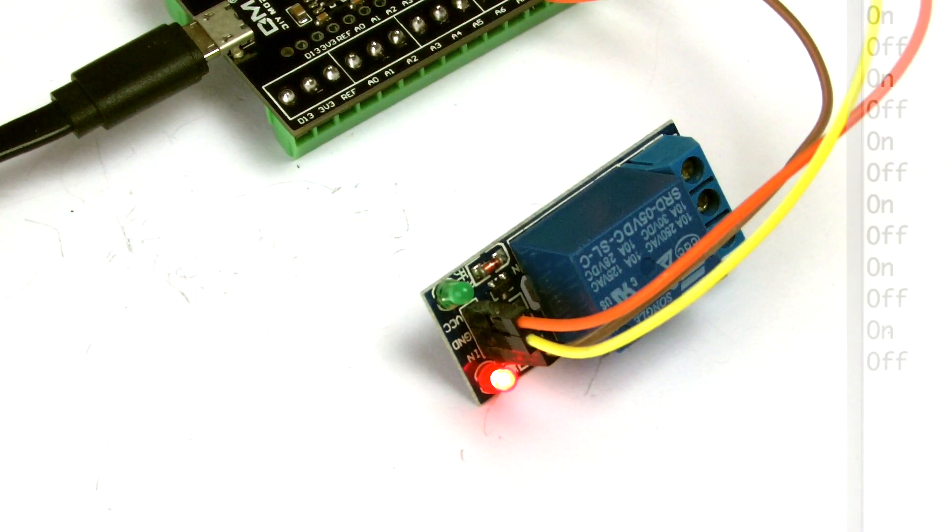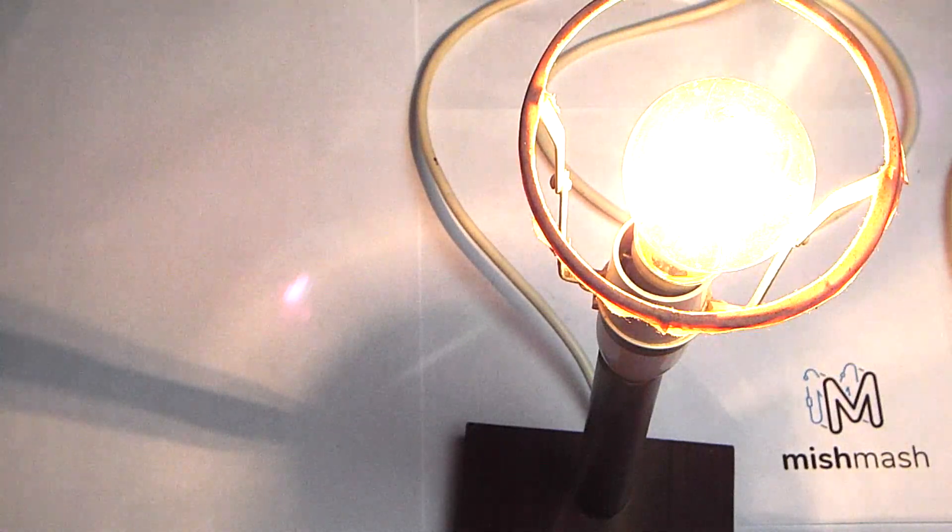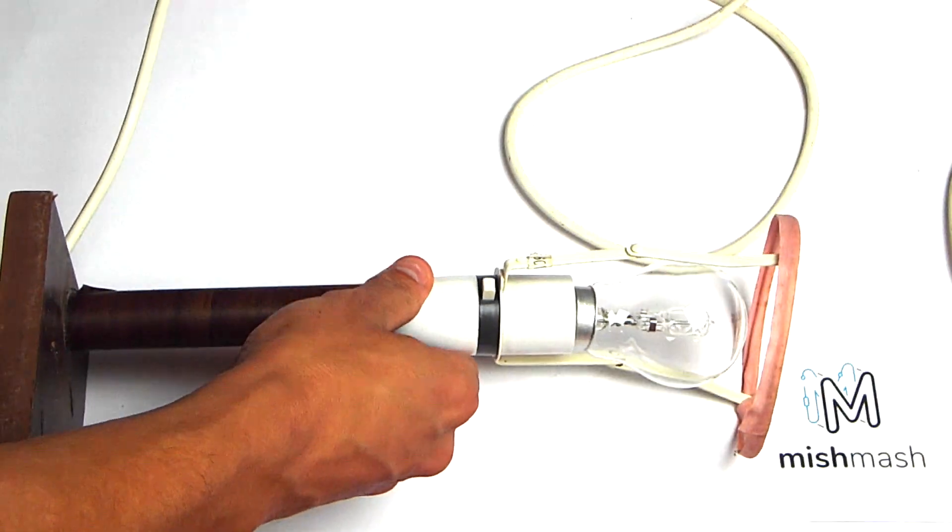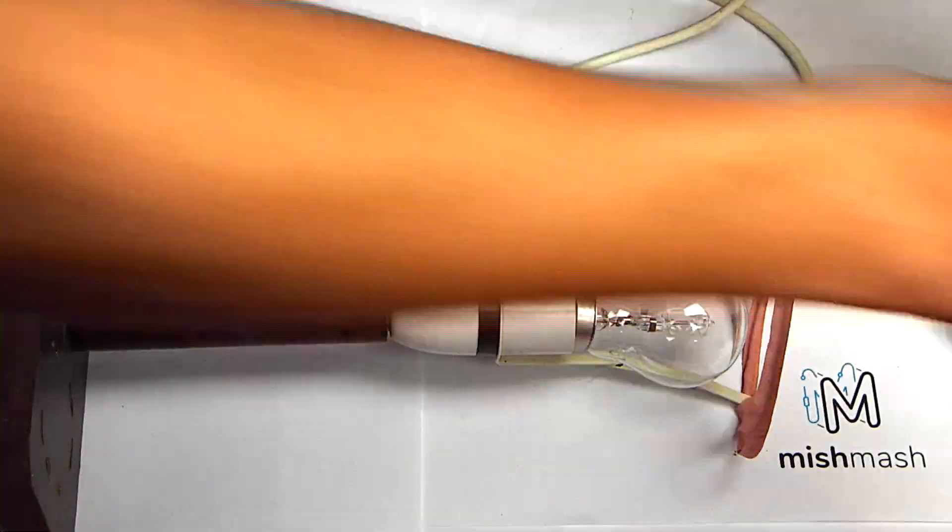Now that we've got the relay working, we can use it to switch a high voltage load, such as a light. First, plug out your light, make sure it's disconnected from the high voltage supply.